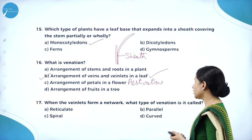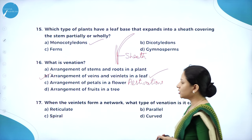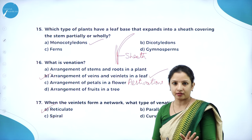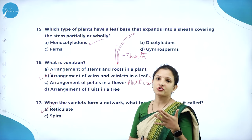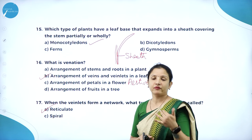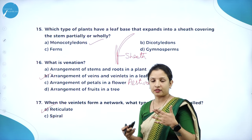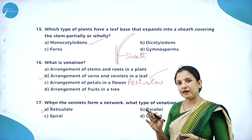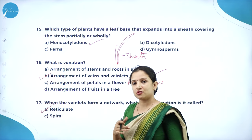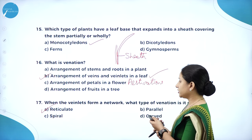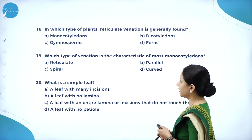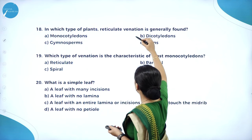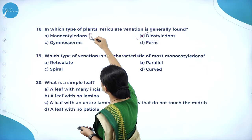When the veinlets form a network, what type of venation is it called? It is called reticulate venation — in biology, whenever the word 'network' comes, it means reticulate (like endoplasmic reticulum). Reticulate venation is usually seen in dicotyledons, and parallel venation is seen in monocotyledons. That is one of the most important identification methods for a dicot versus monocot leaf.